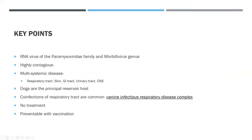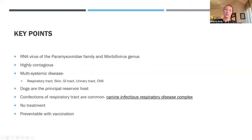Some key points about canine distemper virus: it is an RNA virus of the Paramyxoviridae family, Morbillivirus genus, and it's actually similar to measles in humans. This disease is very contagious. If you diagnose a dog with distemper, you need to communicate that to any other dogs that have come in contact with that dog — whether it's in a shelter setting or around friends' dogs — because it's just so contagious.